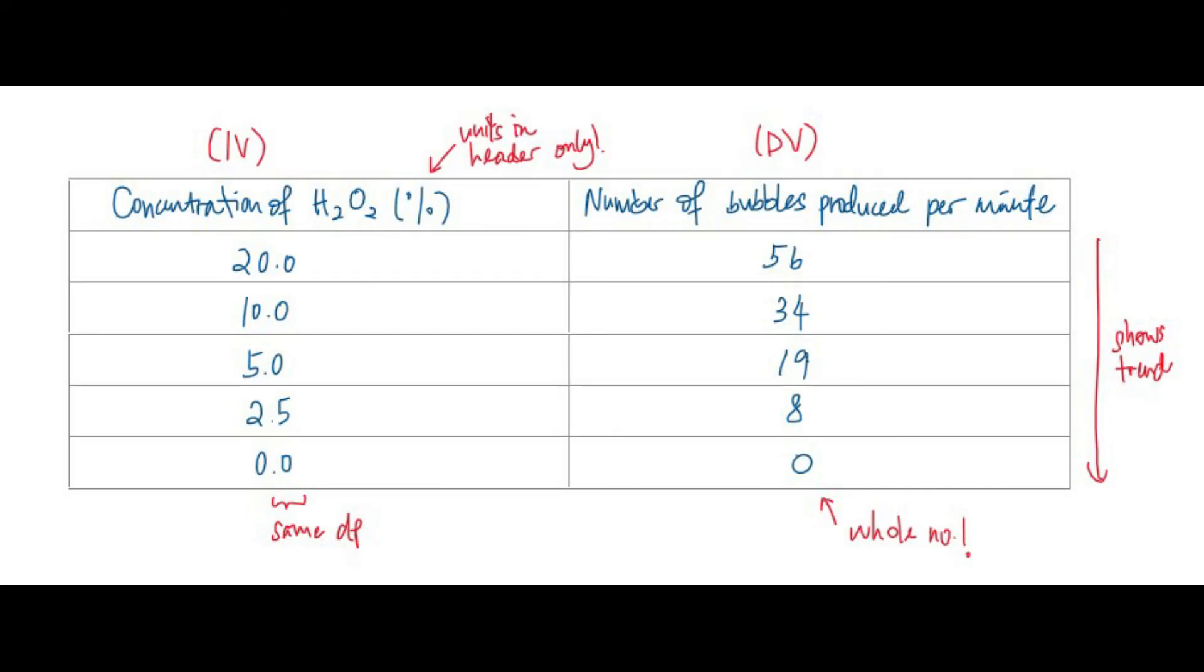So even if you take multiple readings and take a mean value, that mean value should also be expressed as a whole number. So most importantly, make sure that your results show the correct trend, because there's always a mark for trend.